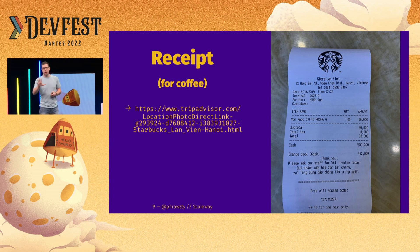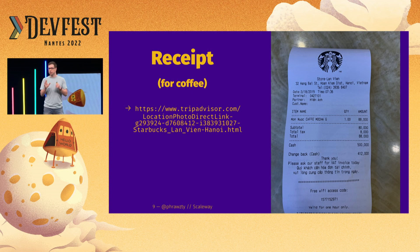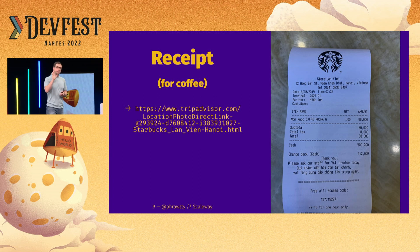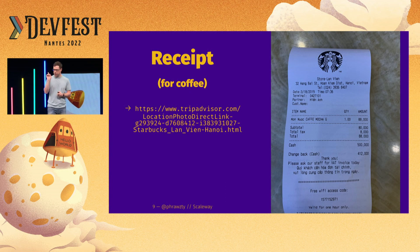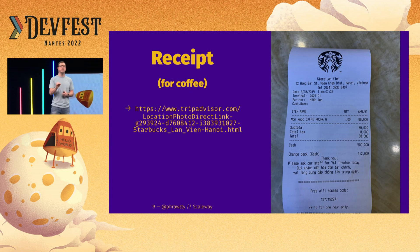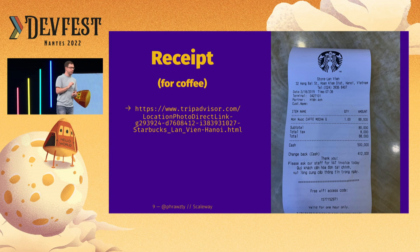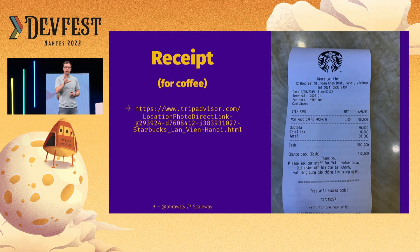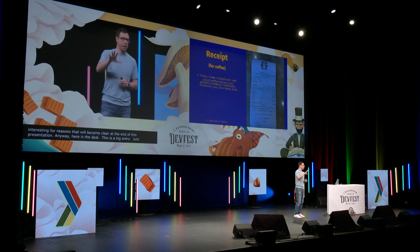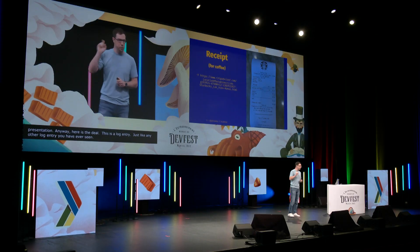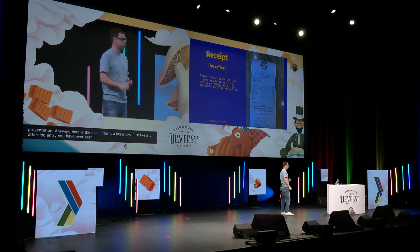A receipt — in this case for coffee. You've seen receipts before. This is not my image; I literally just searched for a Starbucks receipt and this is the first one that popped up. And the fact that the very first result was going to be perfect for my presentation is interesting for reasons that will become clear at the end. This is a log entry, just like any other log entry you have ever seen — syslog, in your browser, in your log aggregator. This is a log entry, believe it or not. So let's break it down.